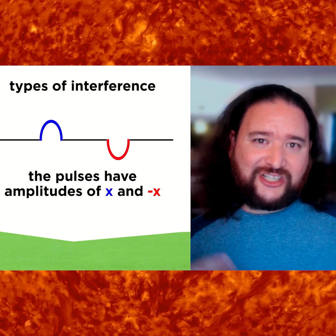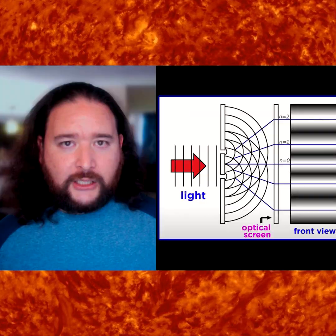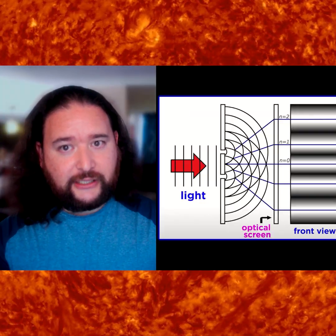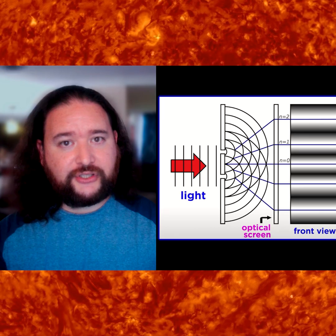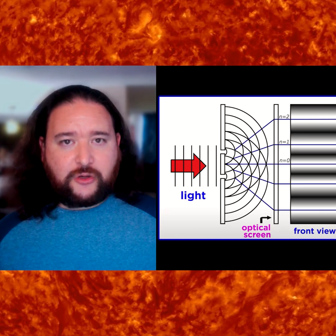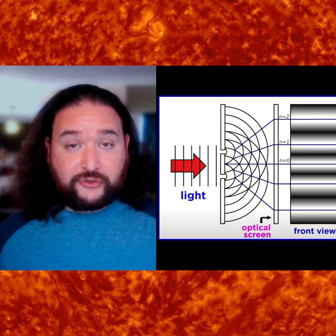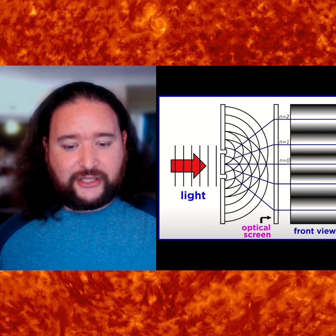Or light can cancel itself out and lead to darkness. So on the sensor at the receiving end, the electron behaves like a wave of light as if it had gone through both slits and then, being a wave, interacted with itself.